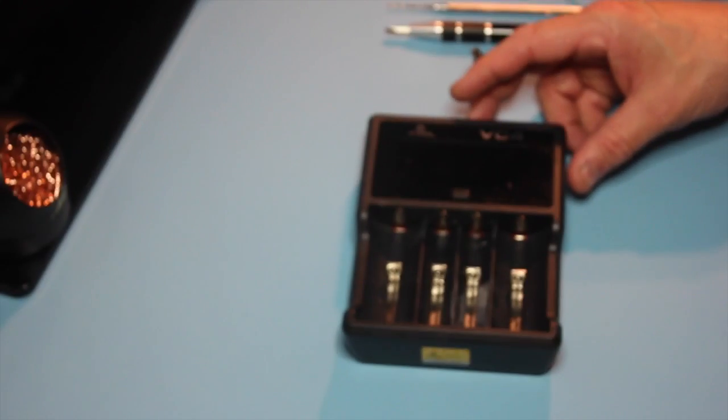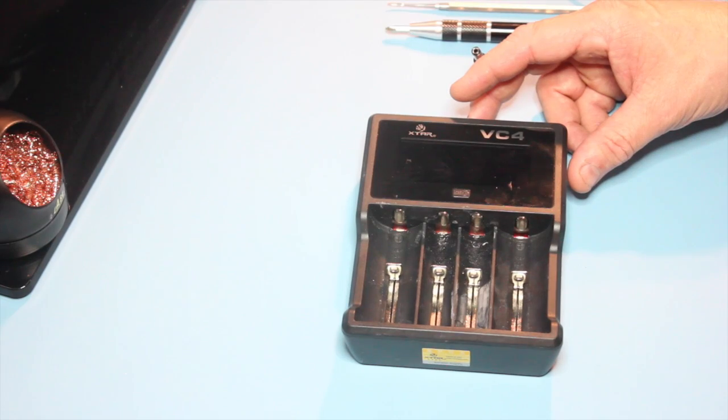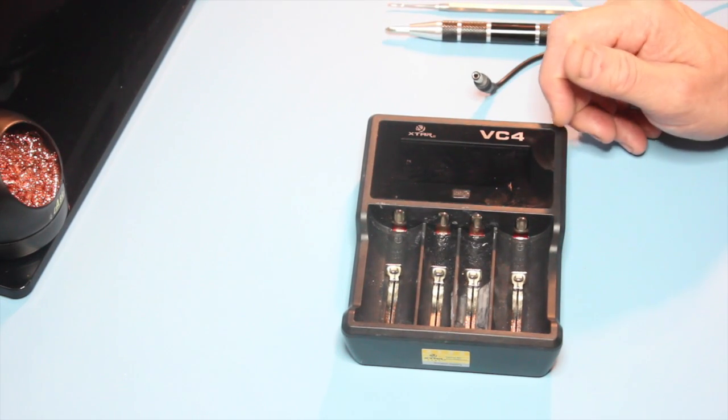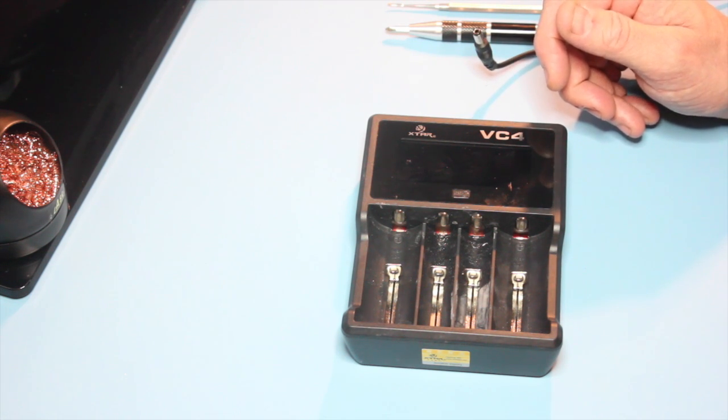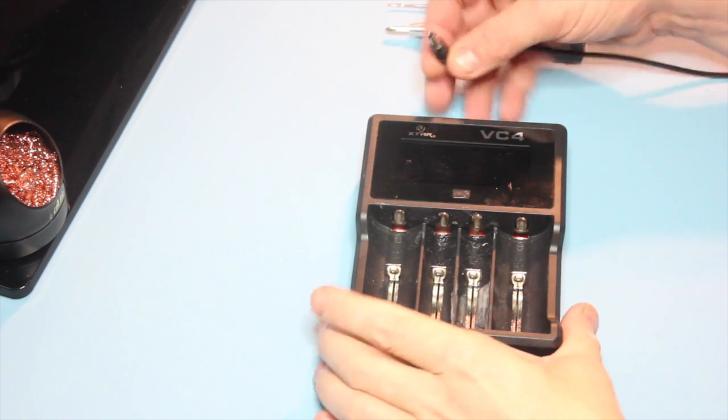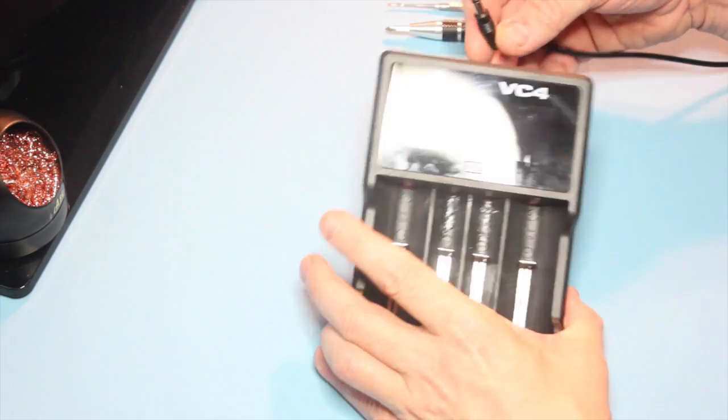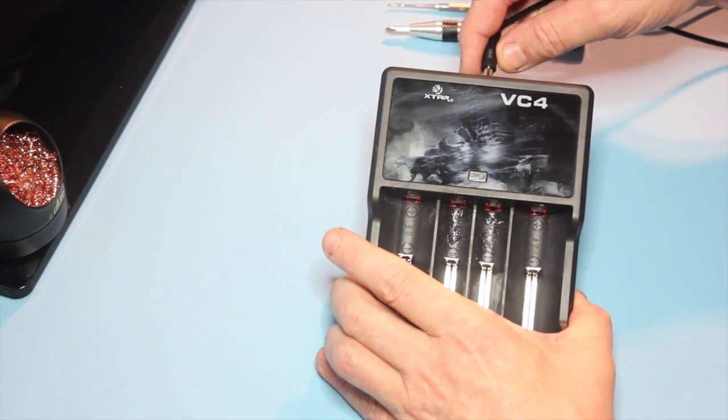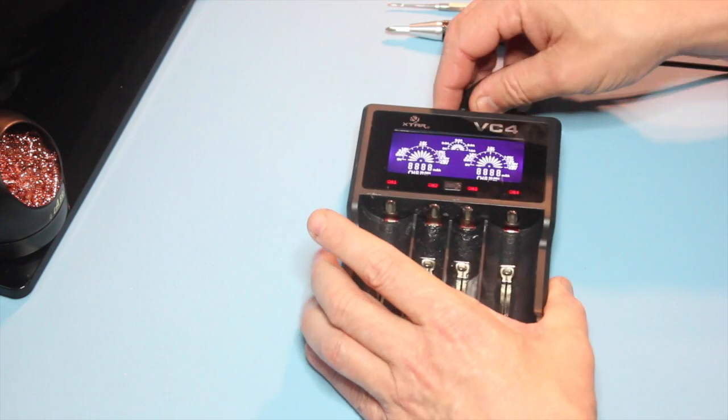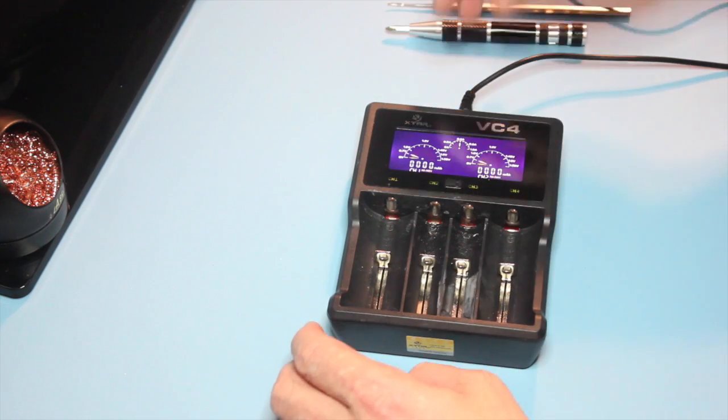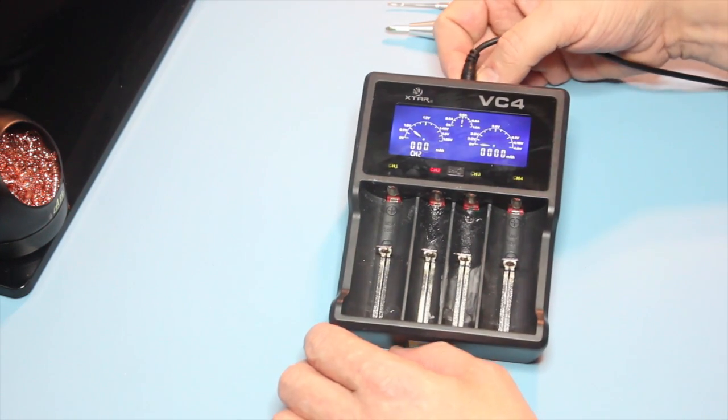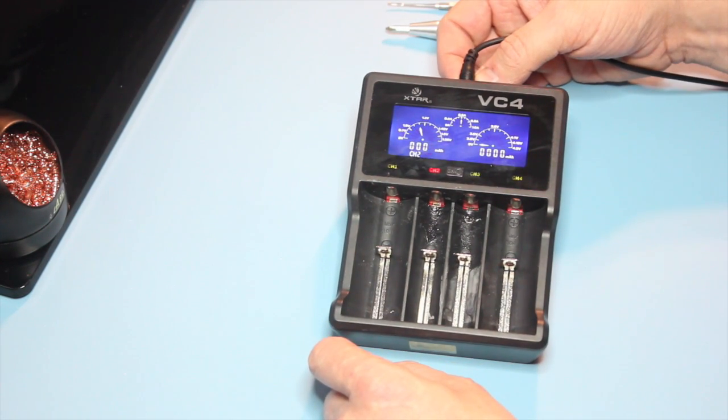An 18650 decided to vent inside it and sprayed everything with electrolyte. I did sort of squirt it with some alcohol and then hoped that it would just rinse everything off the board.